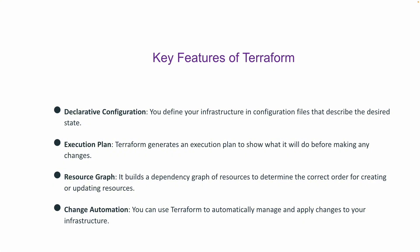Key features of Terraform include: declarative configuration, execution plan, resource graph, and change automation. Declarative configuration means you define your infrastructure in configuration files that describe the desired state. The execution plan feature means Terraform generates an execution plan to show what it will do before making any changes — you can review your resources before deploying infrastructure.